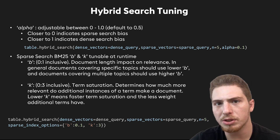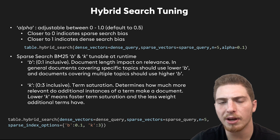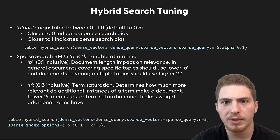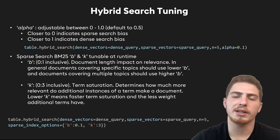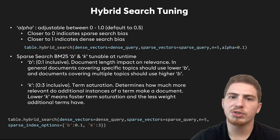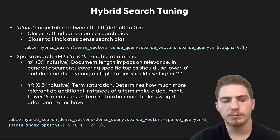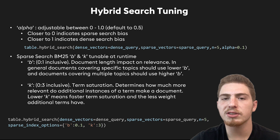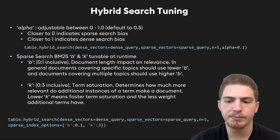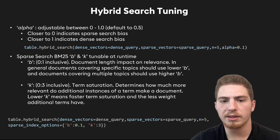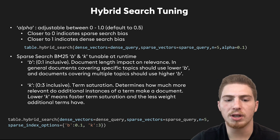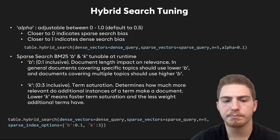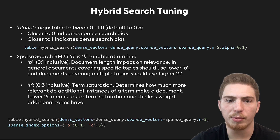If you really want to get those last little pieces of search performance, being able to change B and K at runtime might be important to you. Below, we have an example of using hybrid search with the KDBAI client. We specify our dense query — which is our dense vector — we specify our sparse vector, the number of results, and we have these additional sparse index options of B and K. We could also specify the alpha parameter.